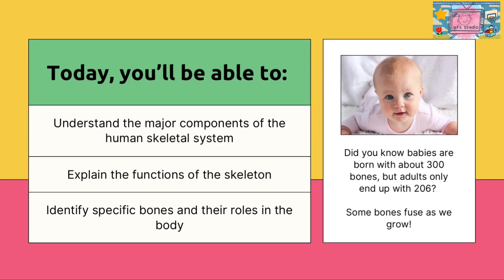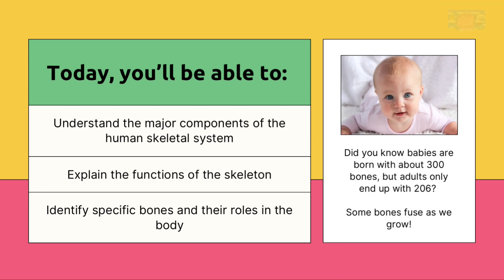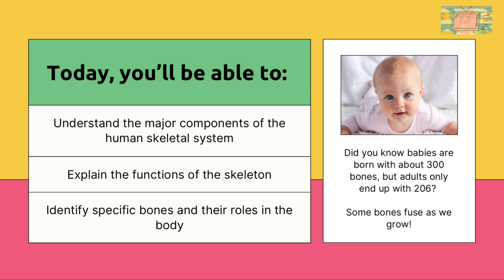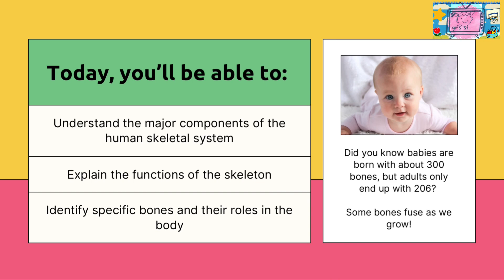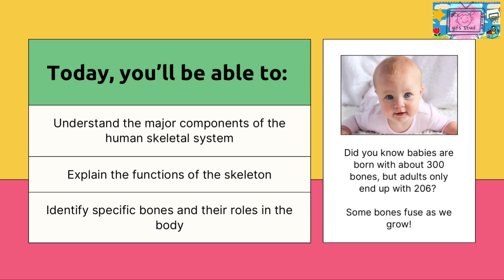Today you will be able to: understand the major components of the human skeletal system, explain the functions of the skeleton, and identify specific bones and their roles in the body. Did you know babies are born with about 300 bones, but adults only end up with 206? Some bones fuse as we grow.